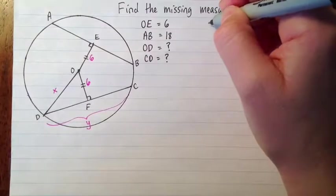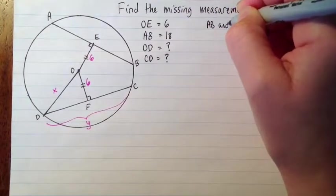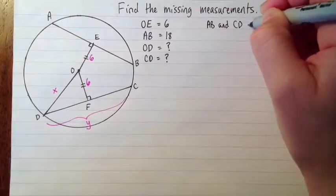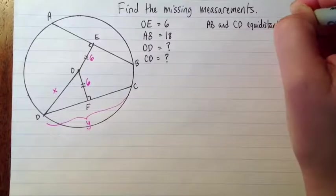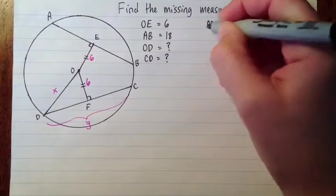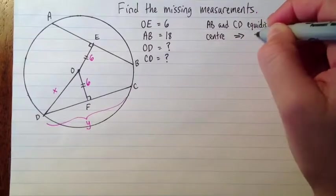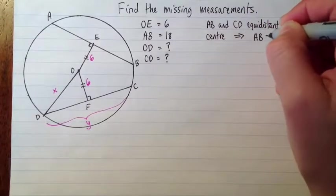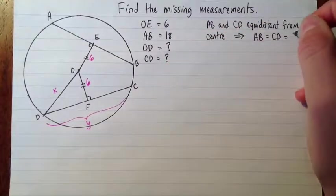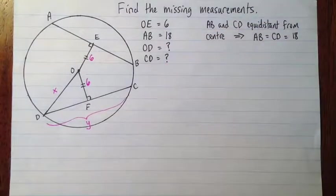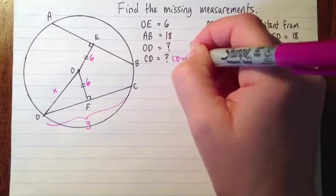So let's just make a note about why. AB and CD equidistant from center, therefore AB equals CD and they're both equal to 18. CD equals 18.